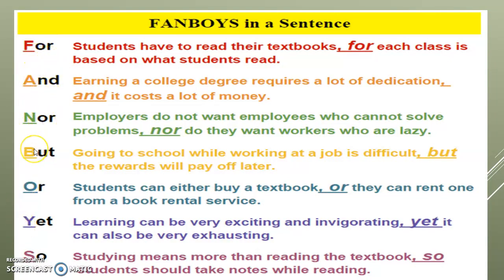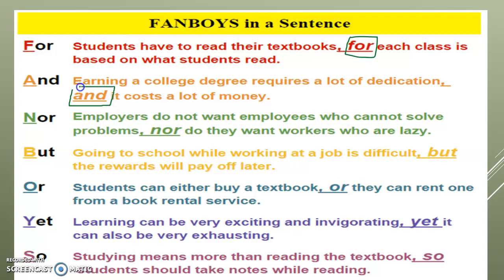Let's look at example sentences using FANBOYS. For: 'Students have to read their textbooks for each class' — the first part is linked to the next with 'for.' And: 'Earning a college degree requires a lot of dedication and it costs a lot of money' — 'and' connects the two parts. Nor: 'Employers don't want advisors who can't solve problems, nor do they want workers who are lazy.' But: 'Going to school while working at a job is difficult, but the rewards will pay off later.'